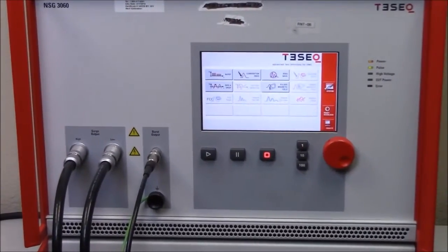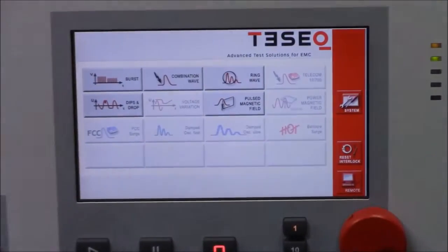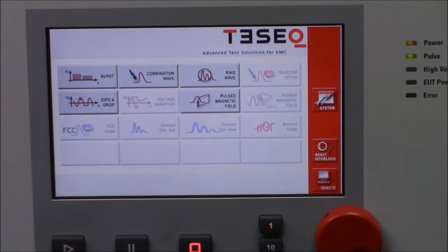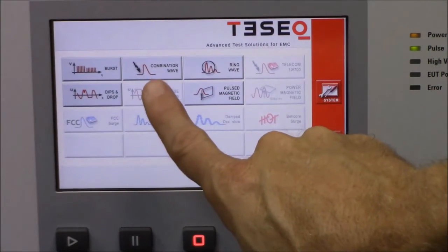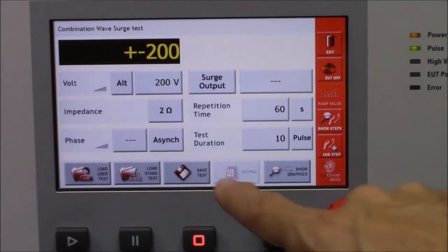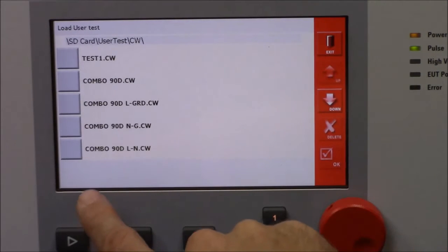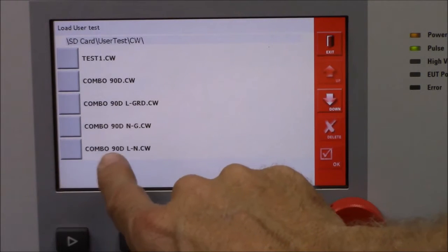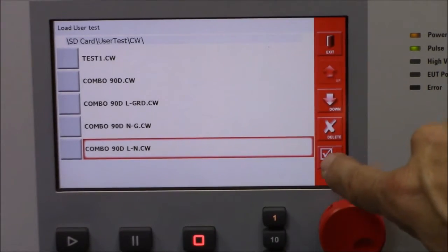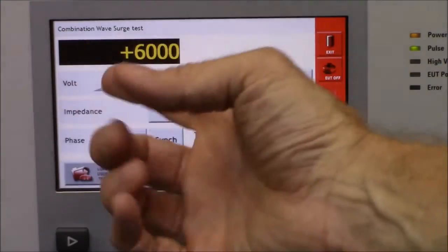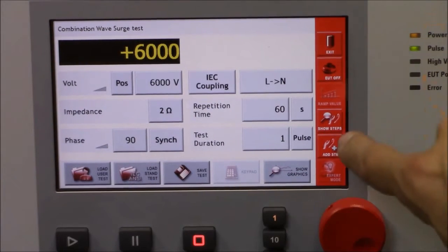Let us zoom in on the screen here and you can see a few things that I'll point out. Here on the screen we have the selection between the combination wave, and as we select that we load the standard user test. Here you can see a combination wave, line to neutral. Hit that, say OK, and here bleeding up the 6,000 volts, line to neutral, exiting out of that.